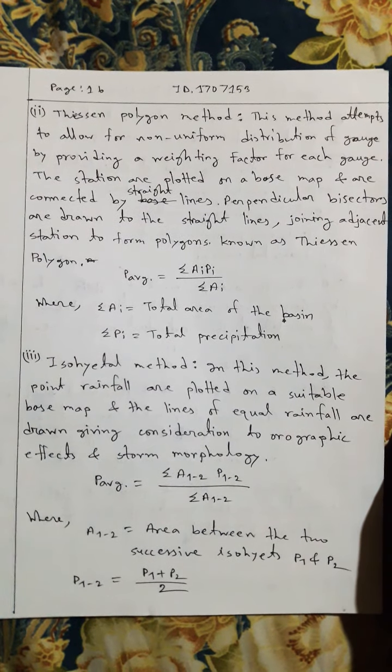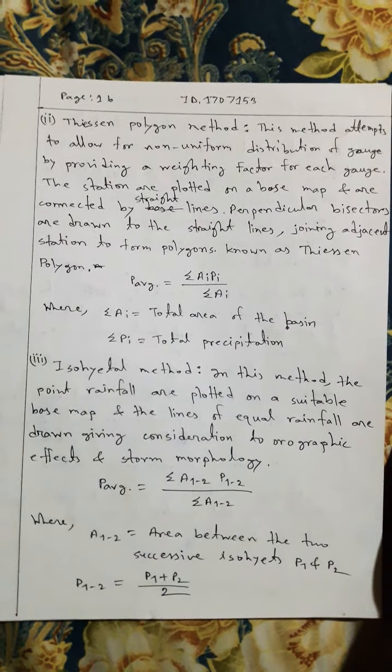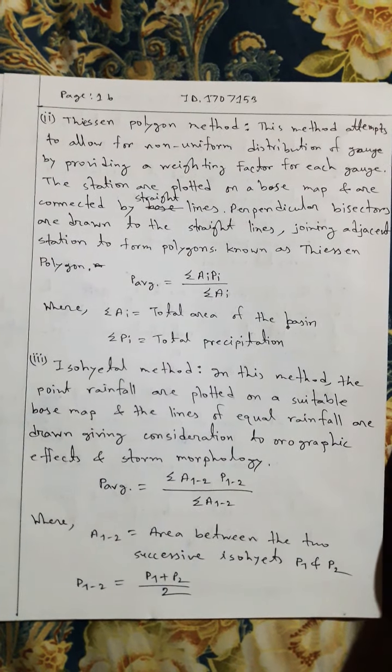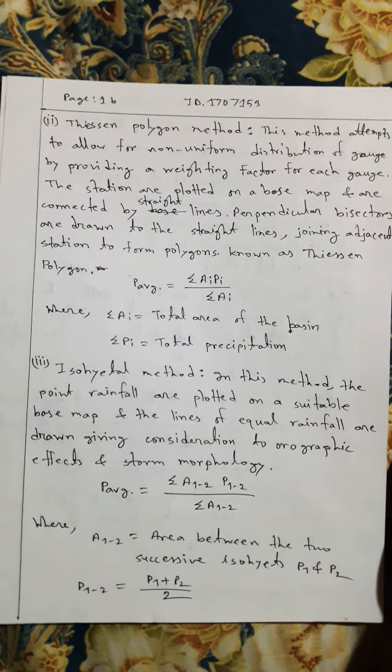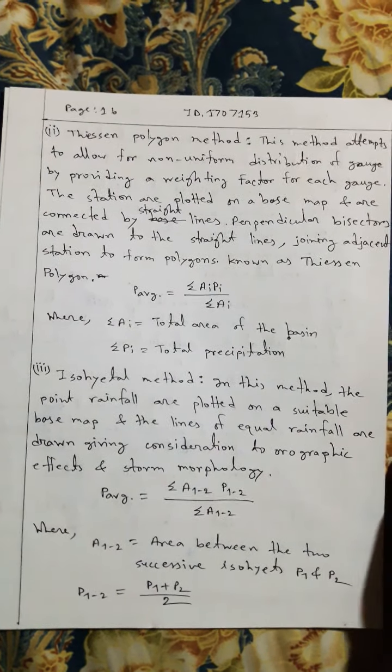P average equals summation of Ai times Pi divided by summation Ai, where summation Ai is the total area of the basin and summation Pi is the total precipitation.